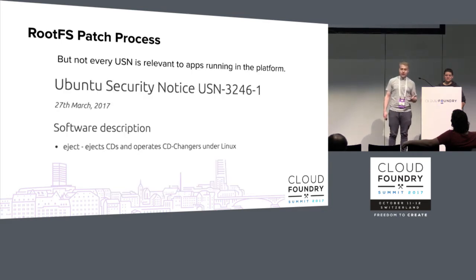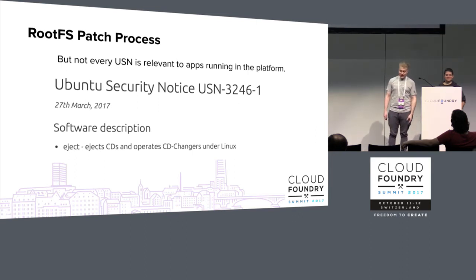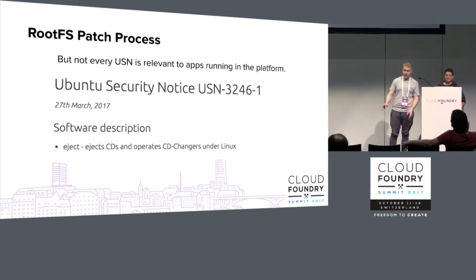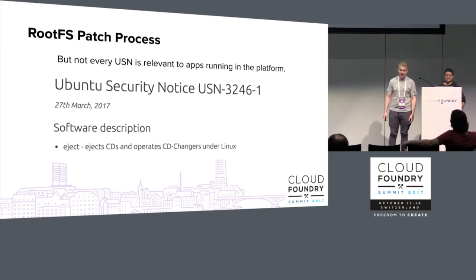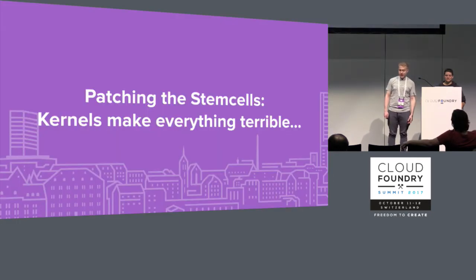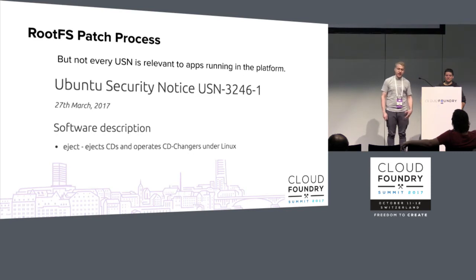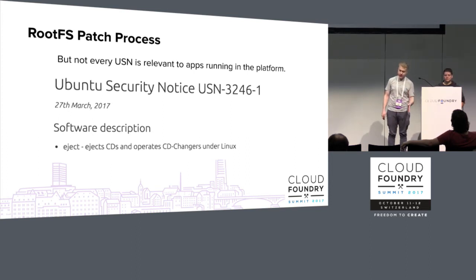Not every one of these USNs is really relevant. For example, this particular vulnerability in eject — which is for CD drives that application containers don't really have — maybe it could cause someone some problems, but it's not terribly important to patch that in a Cloud Foundry application container in less than 48 hours. The real challenge is how do we get people and teams to pick up the new rootFS when it comes out, and how do they know they really need to update it immediately? That's the remaining challenge.